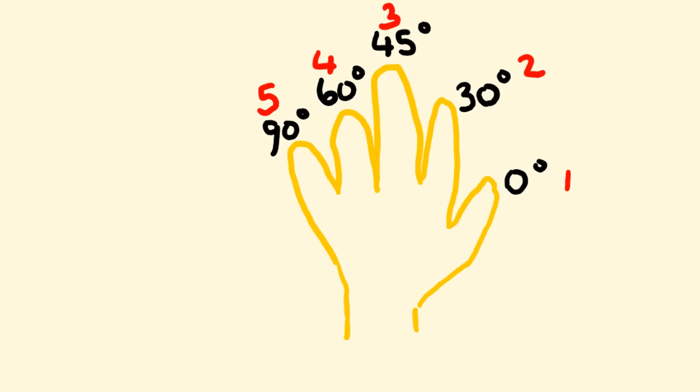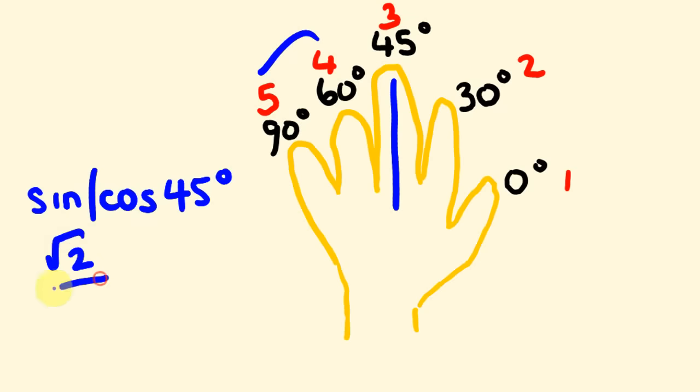What about one last one? Say we want to work out the sine and cosine of 45 degrees. We're on the old middle digit there. So the sine, we've got two fingers here, 1, 2. Square root of 2 over 2. The cosine is square root of 2 over 2. Pretty cool, right? So that's how you do these.